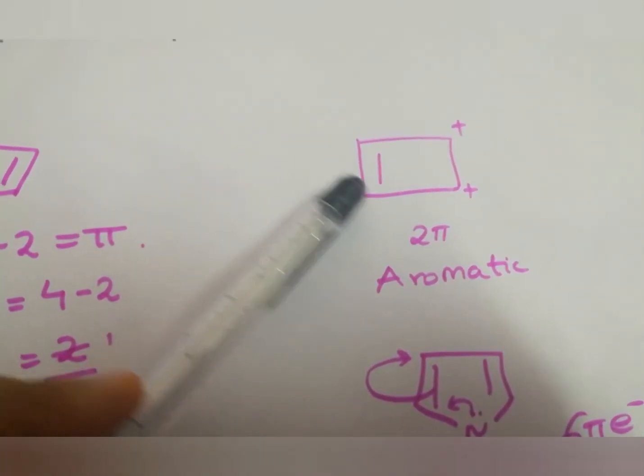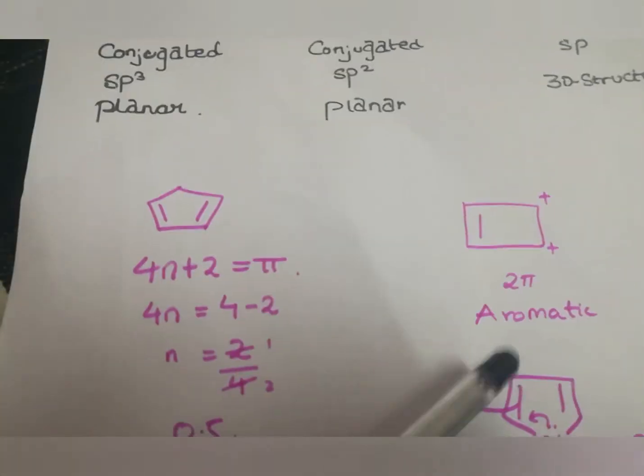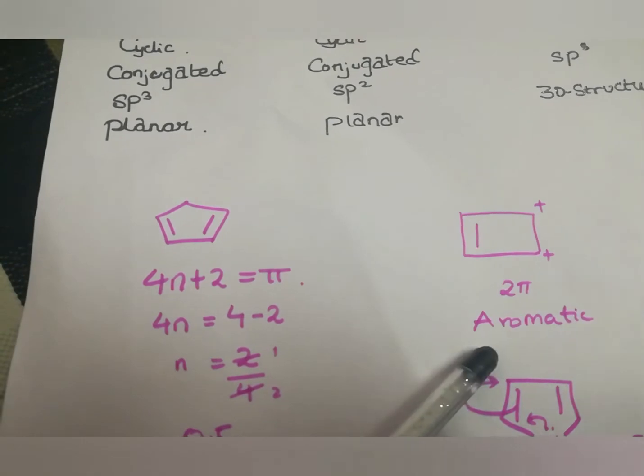In this case, it contains 2 pi. Therefore, it is aromatic. As we have seen, 2 electrons means it is aromatic.